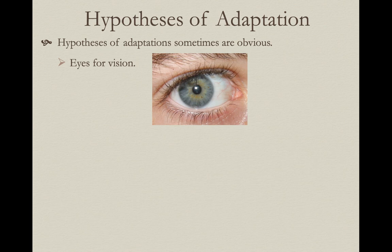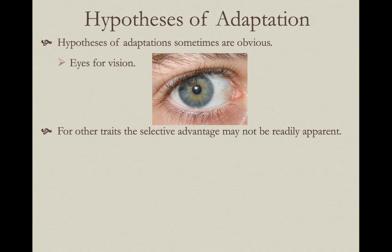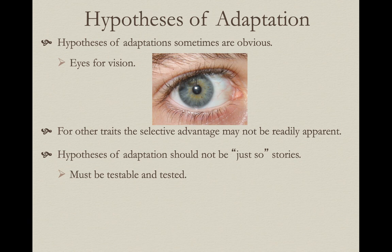As scientists we have to test hypotheses — take a scientific approach to understand biological phenomena. If we're going to assume a trait is an adaptation, we have to form a hypothesis that's testable and falsifiable. In some cases those hypotheses are pretty obvious: eyes are clearly adaptive for forming vision. For other traits the selective advantage may not be as readily apparent. It's very important that hypotheses, even obvious ones, shouldn't be 'just-so stories' — you can't just form a hypothesis and assume it's right without testing it. That's bad science. A hypothesis must be testable and you have to test it.